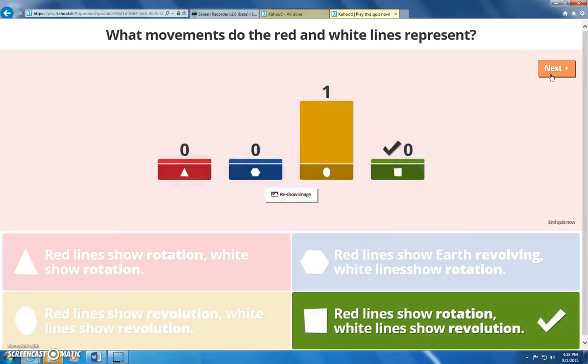Rotation. So, the earth does not revolve around itself. The earth revolves around the sun, but it rotates on its axis. So, the red lines show rotation and the white lines show that it revolves around the sun.